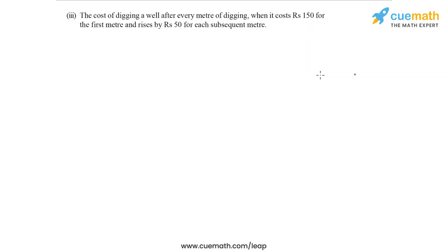Now let's go to part 3. The situation says: the cost of digging a well after every meter of digging when it costs Rs. 150 for the first meter and rises by Rs. 50 for each subsequent meter. This is actually similar to the first part. So let's write the cost of digging after every meter.